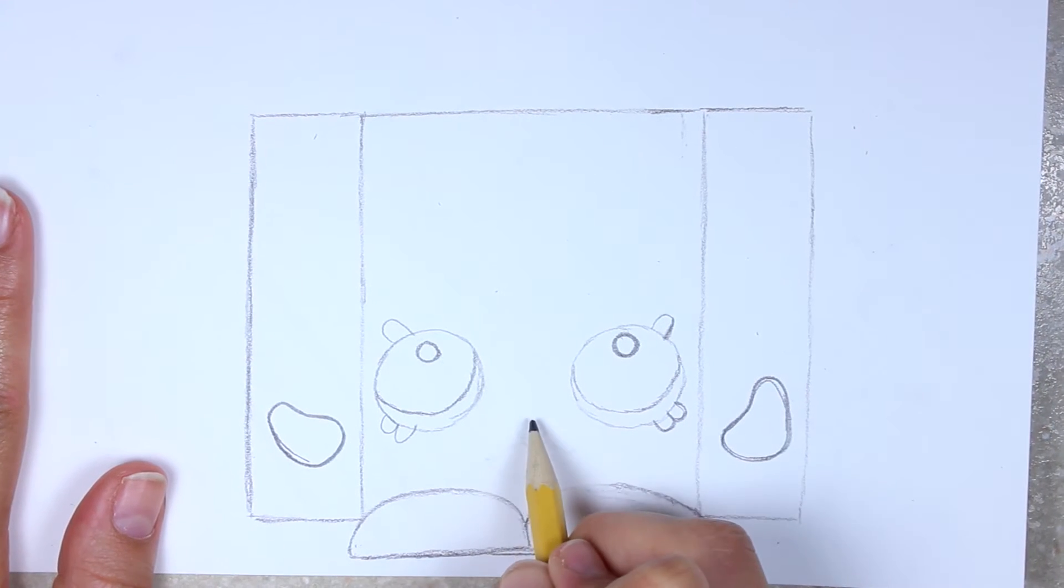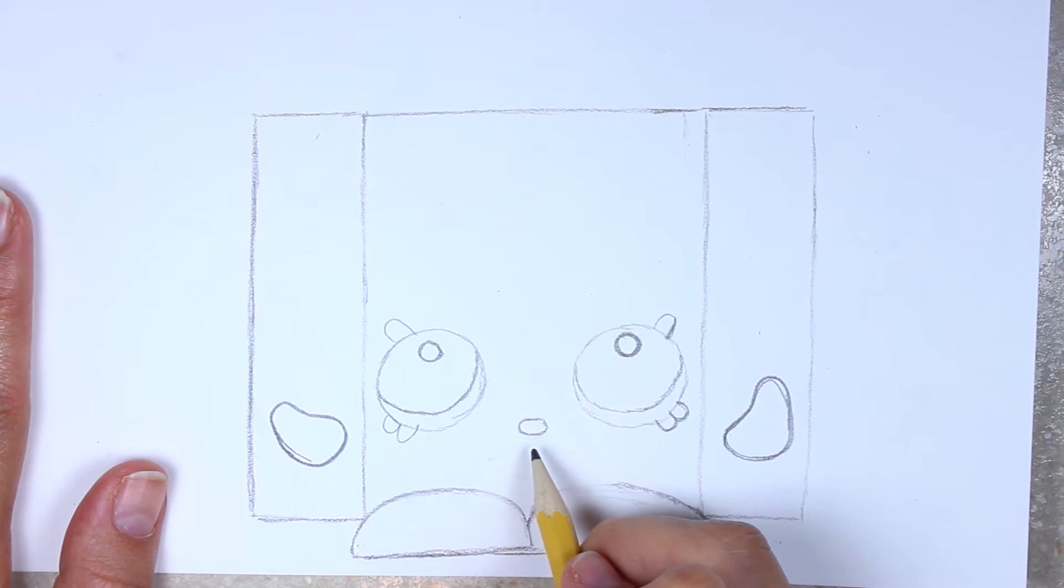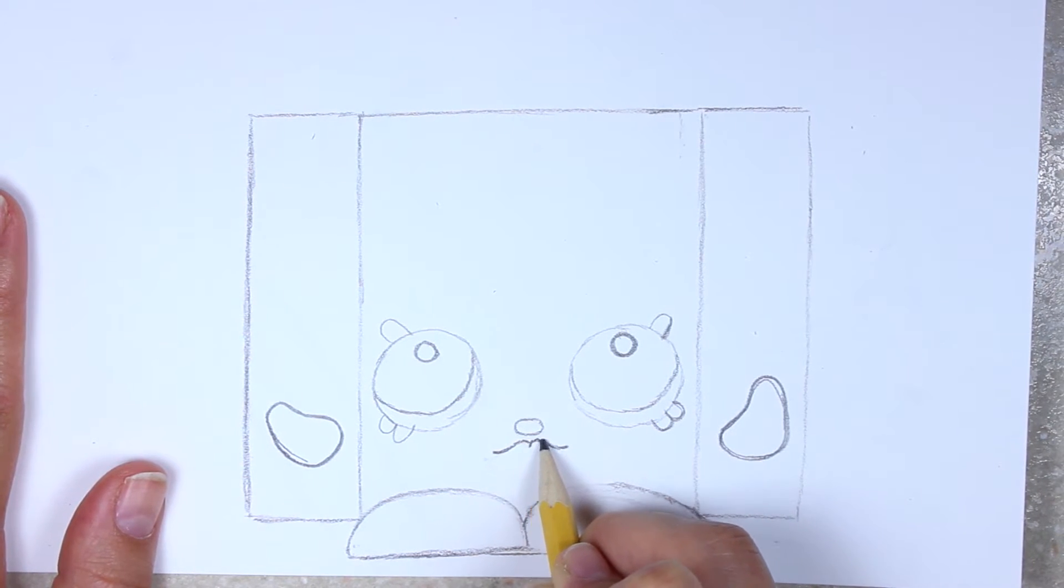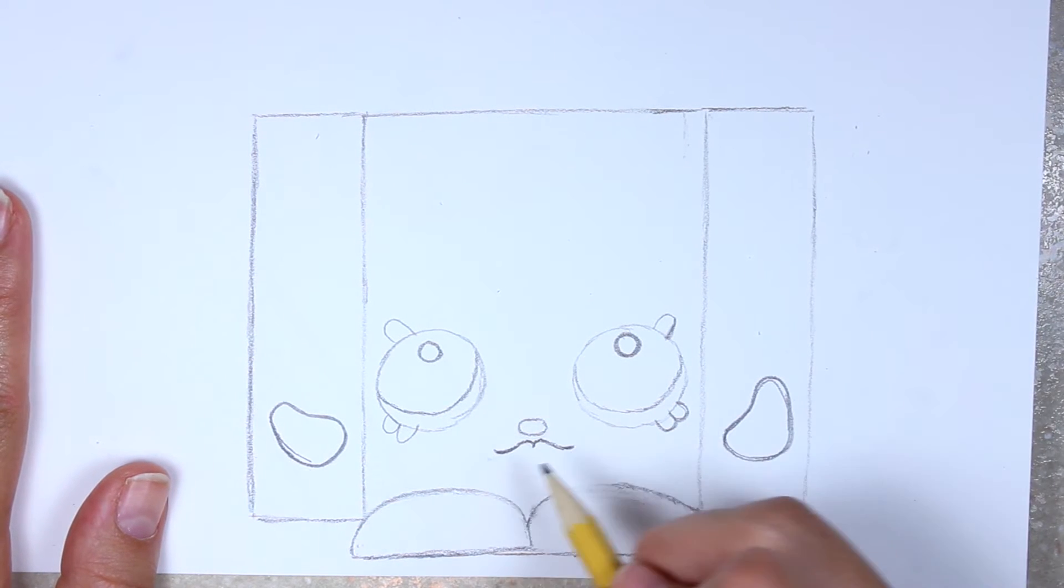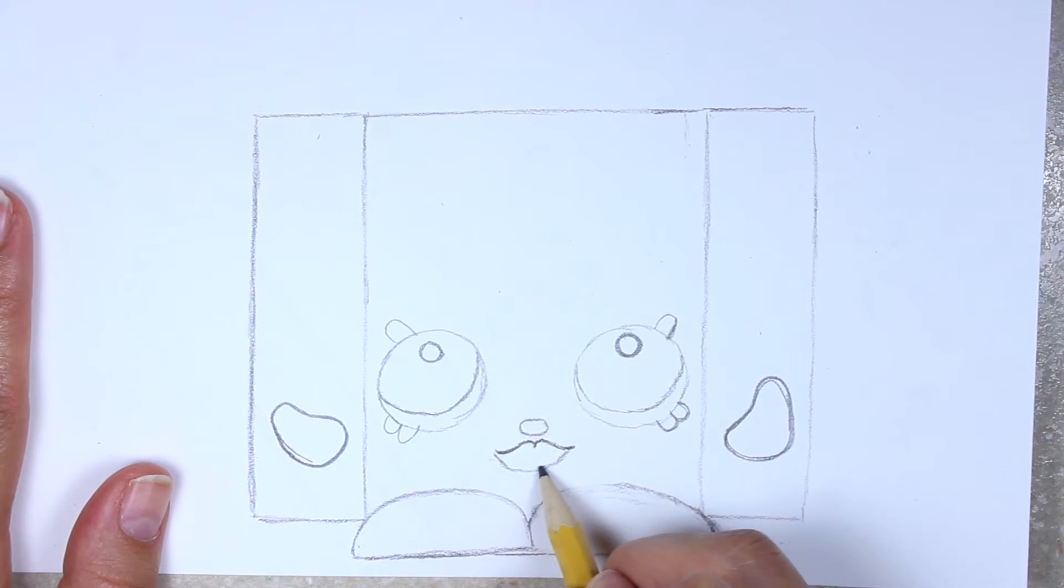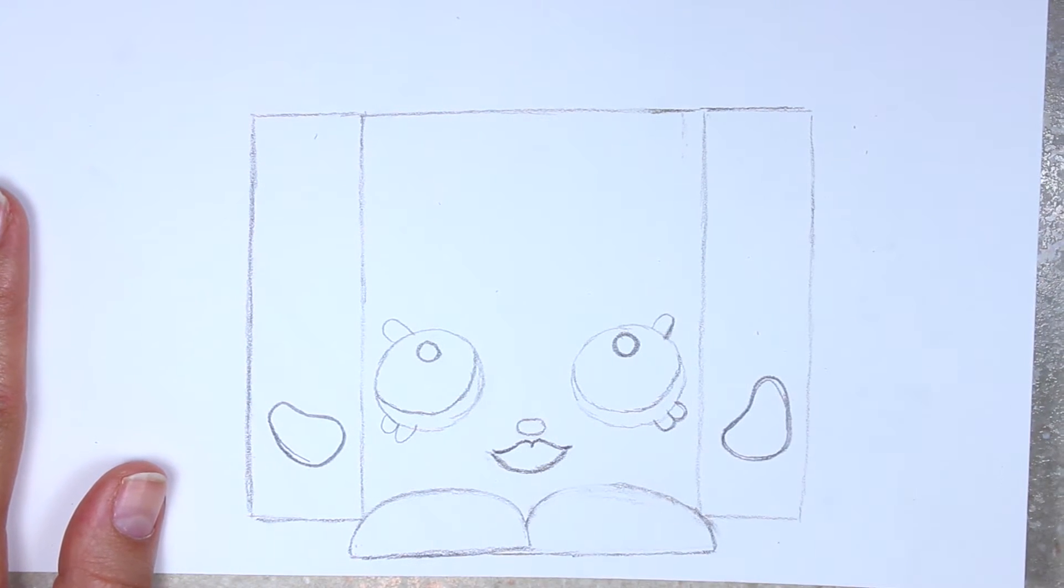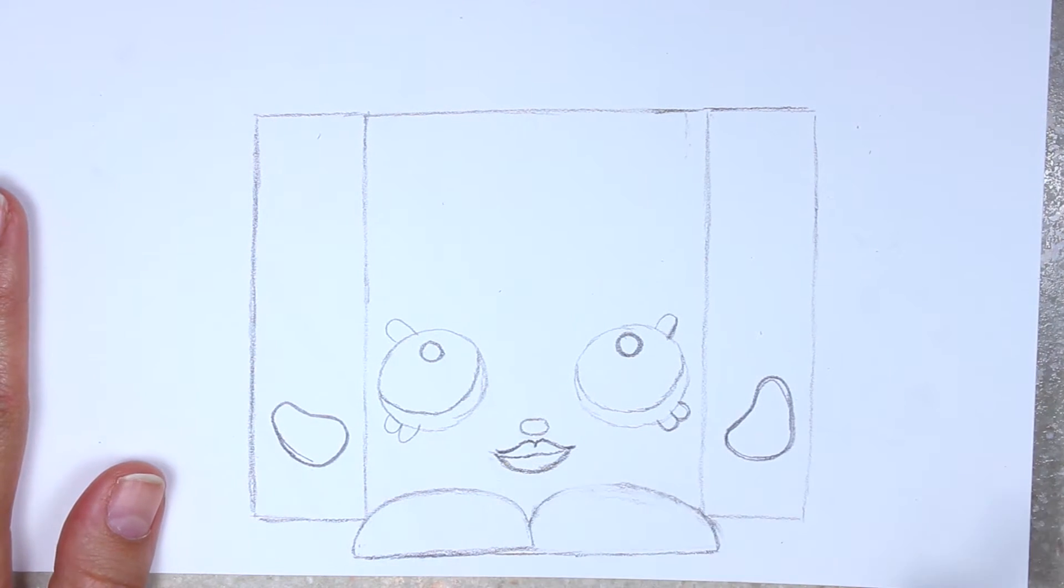Now her nose, her nose is super teeny tiny. So you can make a tiny little oval right there. And then her lips, they kind of look like an M. So they're very curvy and they go slightly up at the ends. Then they come down just a tad bit like this. And don't forget to draw on that line that divides the upper and bottom lip. We are almost done, guys.